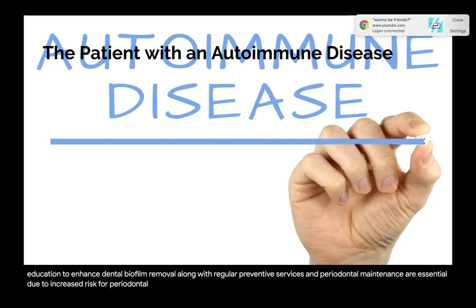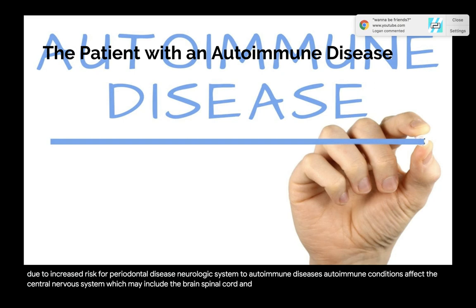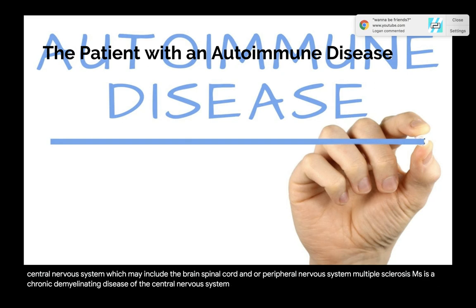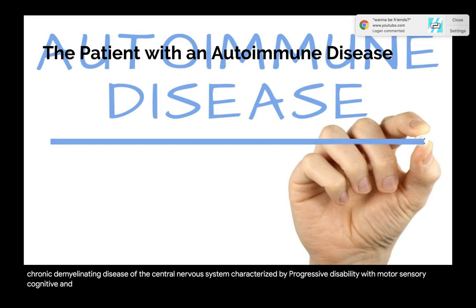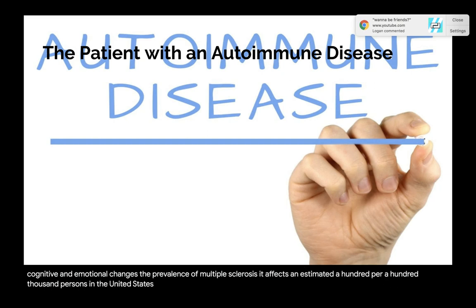Neurologic system autoimmune diseases affect the central nervous system, including the brain, spinal cord, and/or peripheral nervous system. Multiple sclerosis (MS) is a chronic demyelinating disease of the CNS characterized by progressive disability with motor, sensory, cognitive, and emotional changes. MS affects an estimated 100 per 100,000 persons in the United States and 2 to 3 million worldwide.